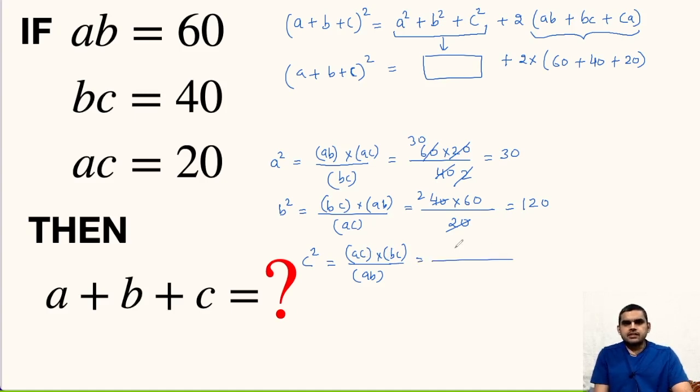AC is 20, BC is 40 and AB is 60. So this will be 3 times. So this is 40 upon 3.